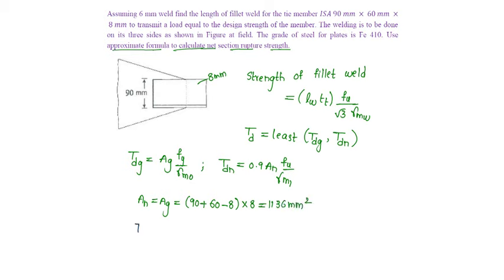Here the net section rupture strength will be equal to 0.9 into net area 1136 into fu 410 by gamma m1 1.25.